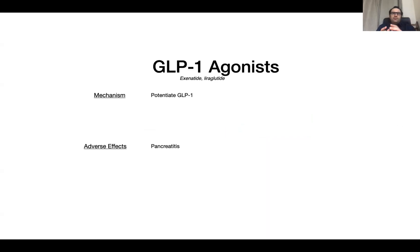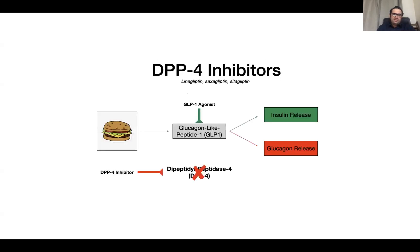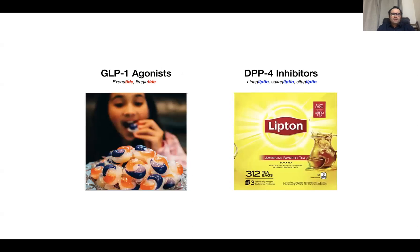There is another group: GLP-1 receptor agonists. Rather than inhibiting the enzyme that destroys GLP-1, we can directly give GLP-1 agonists — exenatide, liraglutide, semaglutide, and dulaglutide. These potentiate GLP-1 and the most common side effect is GI. So you can either give a GLP-1 agonist (ending in '-tide') or inhibit the enzyme with a DPP-4 inhibitor (ending in '-liptin').